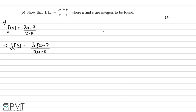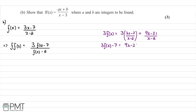For the numerator, 3·f(x) = 3·(3x - 7)/(x - 2) = (9x - 21)/(x - 2). So 3·f(x) - 7 = (9x - 21)/(x - 2) - 7/1. Combining over a common denominator: (9x - 21 - 7(x - 2)) / (x - 2) = (9x - 21 - 7x + 14) / (x - 2) = (2x - 7) / (x - 2).